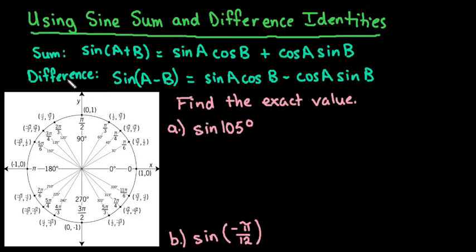I have written out both the sum and difference identities for sine. Sine of the sum of two angles is equal to sine of the first angle times cosine of the second angle plus cosine of the first times sine of the second.